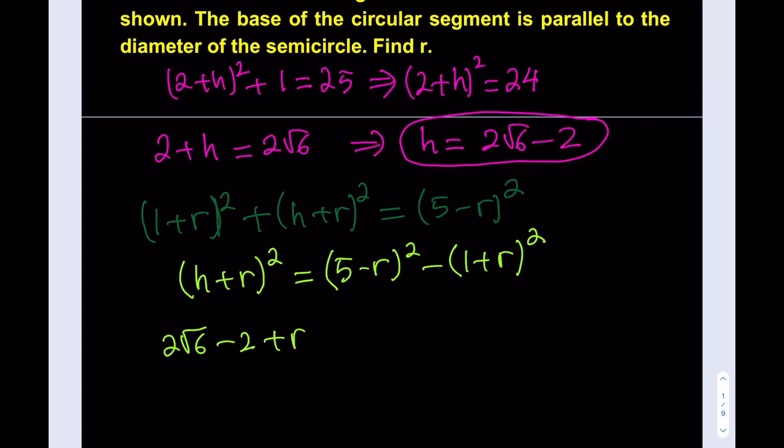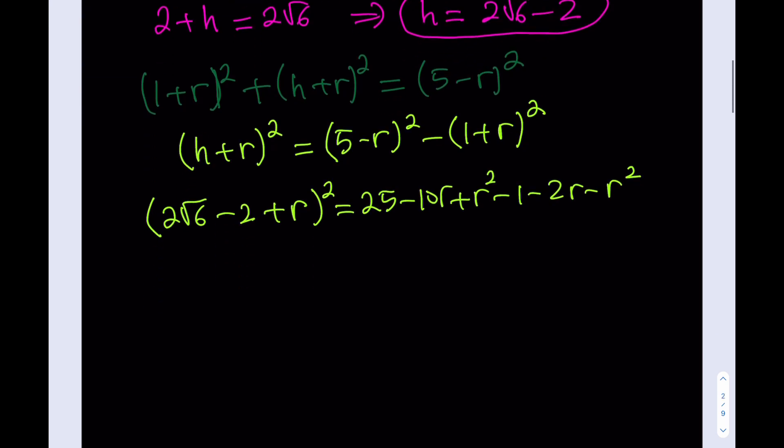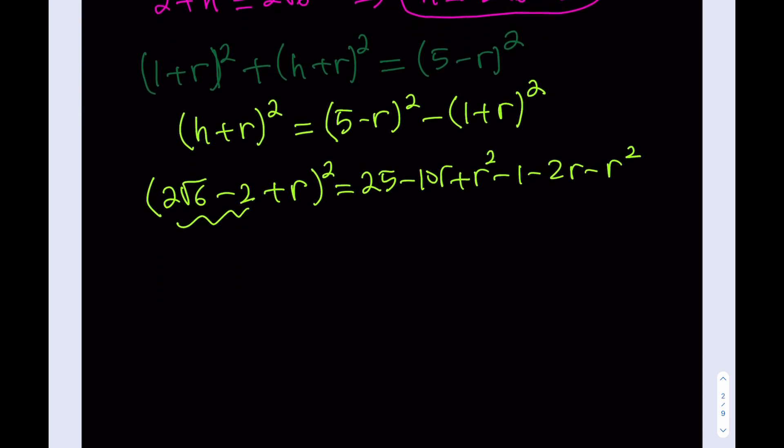It's (2√6 - 2 + r)², and then this is going to equal 25 - 10r + r² - 1 - 2r - r². Everything in the second parentheses is going to be negated because of the minus sign.